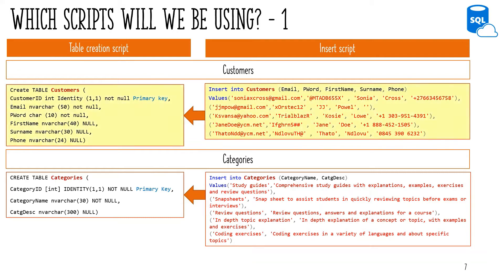In the Customers Insert Script, the Customer ID column is not included in the Insert List, as it is a primary key column with an identity property specified. A primary key uniquely identifies each row in a table. Identity indicates that a unique Auto Number will be generated when you insert a new row, in this case starting at the seed which is 1, and incrementing with 1.